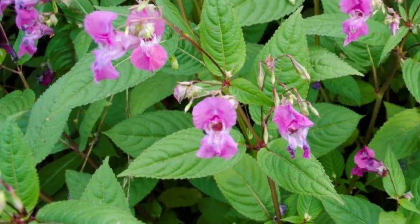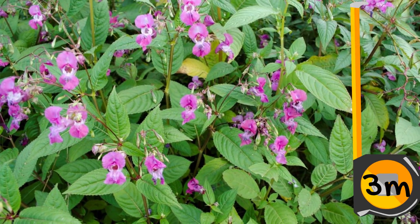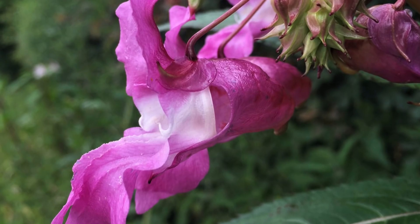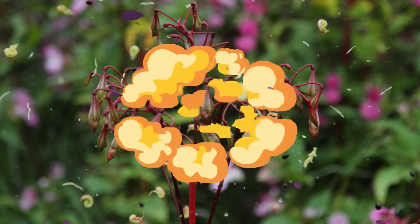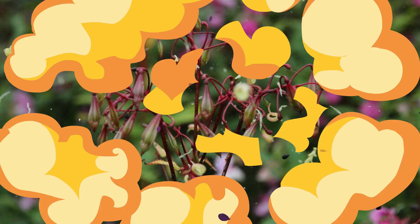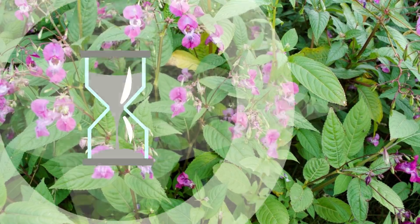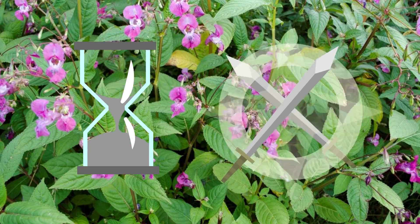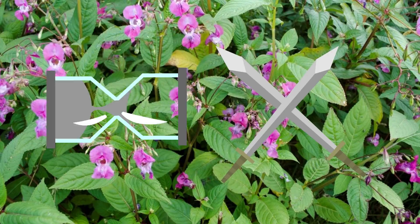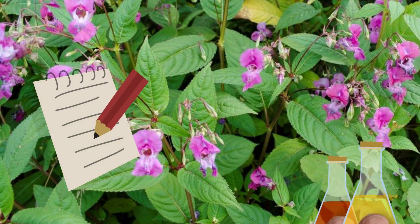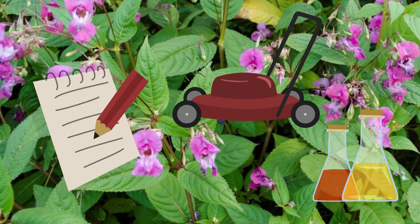Himalayan balsam is a tall annual — growing up to three metres — identified by clusters of pink trumpet-shaped flowers, followed by seed pods that open explosively when ripe. Its leaves are elliptical with jagged edges. It spreads very quickly and can smother and out-compete other vegetation. If Himalayan balsam is found on site, a management plan will need to be developed to manage its removal through mechanical or chemical means.